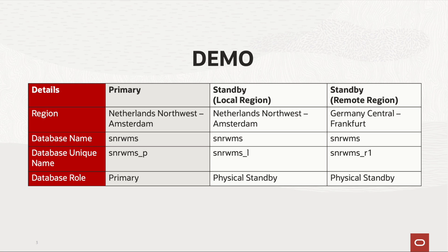Here are the environment details. We have our primary database in OCI. We will then create a local standby database, and then create another standby database that is remote, located in the OCI Frankfurt region. On screen we can see details such as the database names, database unique names, and the database roles we are going to configure. We shall now see the demo.